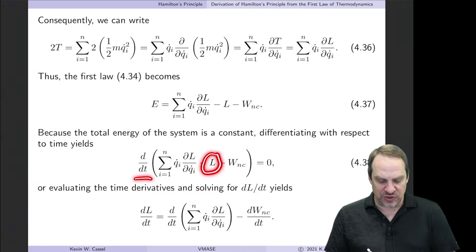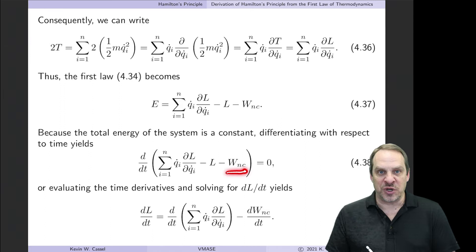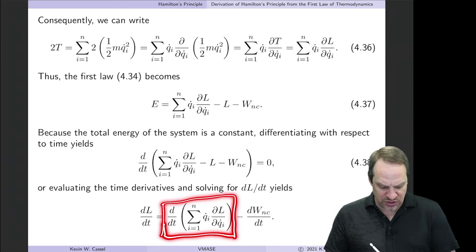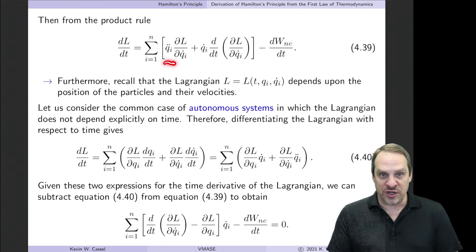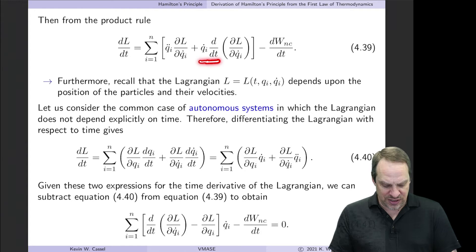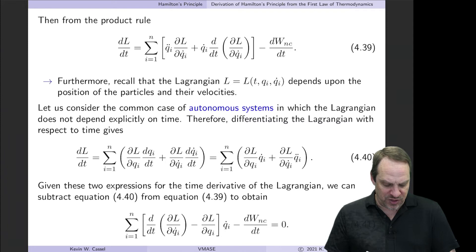Differentiating and solving for dL/dt, we get dL/dt equals d/dt of q̇ᵢ times ∂L/∂q̇ᵢ, minus d/dt of W_NC. Applying the product rule to the first term gives: the sum of q̈ᵢ times ∂L/∂q̇ᵢ, plus q̇ᵢ times d/dt of ∂L/∂q̇ᵢ, minus dW_NC/dt. The Lagrangian is in general a function of the independent variable t, the dependent variables qᵢ, and their derivatives q̇ᵢ.